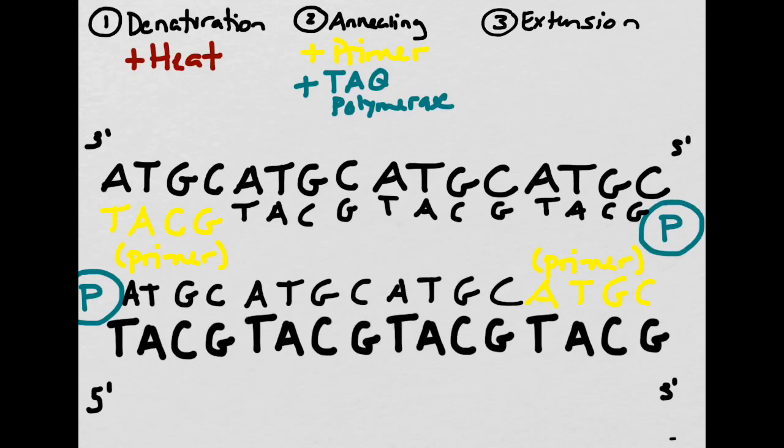During the third part of the reaction, extension, we can repeat steps one and two as many times as necessary. We'll split the DNA molecule using heat, then we'll attach primers, and then use taq polymerase to attach free-floating nucleotide bases. The more times we repeat this reaction, the more times we'll magnify the amount of DNA.